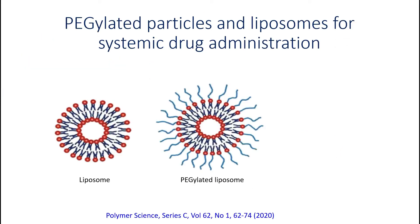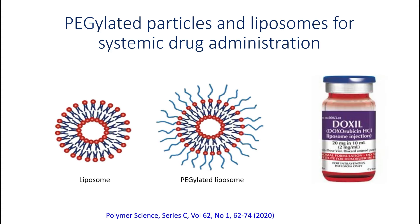PEGylated liposomes and nanoparticles are used to increase the time of particle circulation and accumulation in the tumor, to reduce the immunogenicity of adenoviruses, and to increase the circulation time of viral gene vectors. In 1995, the FDA approved the first drug called Doxil, based on PEG liposomes. Doxil's stealth liposomes increase the bioavailability of doxorubicin by 90 times within one week after injection, while increasing the circulation time in the blood and the elimination half-life.